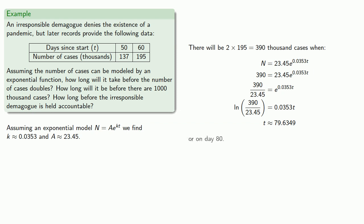It's important to recognize that it's already day 60, so that means the number of cases will double just 20 days later.